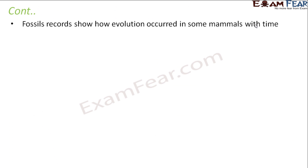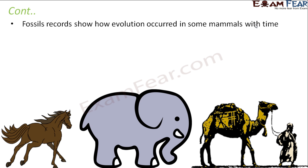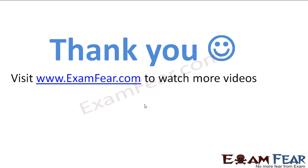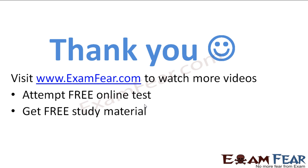Fossil records also show how evolution occurred in mammals over time. By looking at different types of fossil records, we see many similarities between different animals like horses, elephants, and camels — everything is related somewhere or the other, and that information is given by fossil records. Thank you. Please visit examfear.com to watch more videos, attempt free online tests, get free study material, and find tutors and mentors.